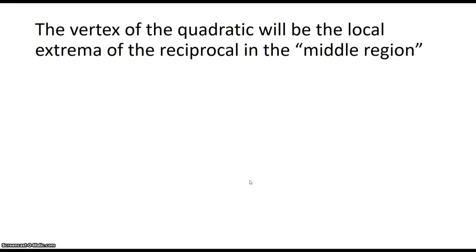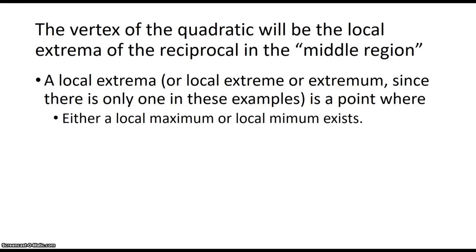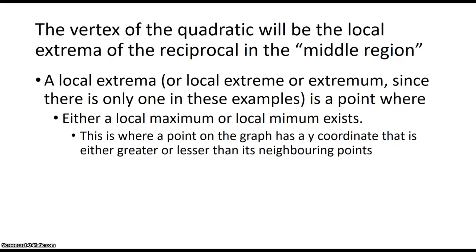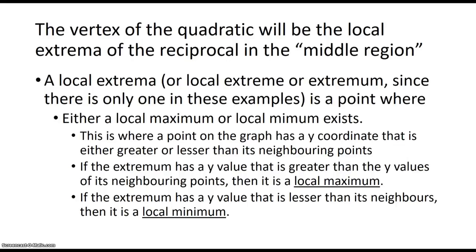The vertex of the quadratic would be the local extrema of the reciprocal in the middle region. A local extrema, or extremum since there's only one, is a point where either a local maximum or a local minimum exists — a point on the graph with a y-coordinate that is either greater or lesser than its neighboring points. If the extremum has a y-value greater than its neighbors, it is a local maximum; if lesser, it's a local minimum.